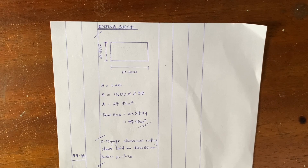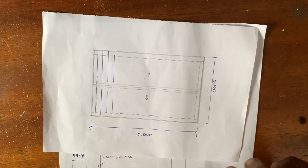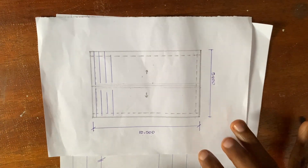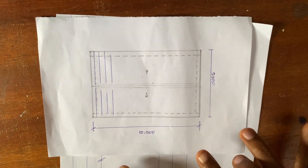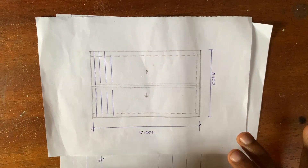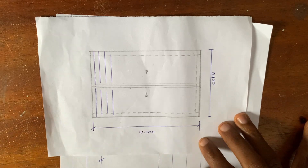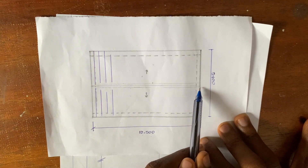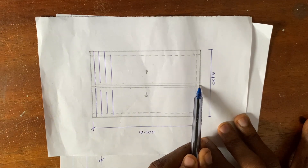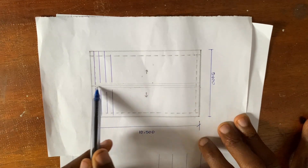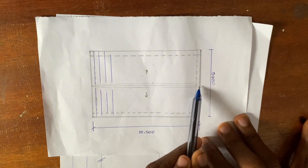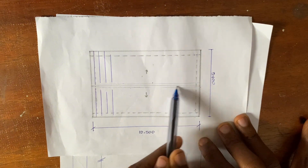Calculating for the roofing sheet is very easy for a gable roof because it is not as complex as that of a hip roof. Now if you look at this, to calculate the area of this roof, all you need to do is cut this roof into two, just as it has been done here.